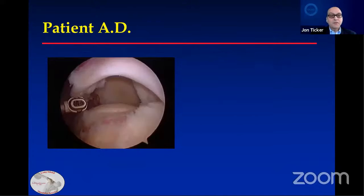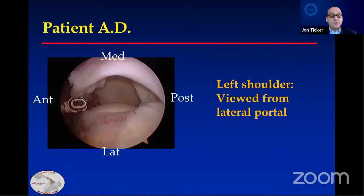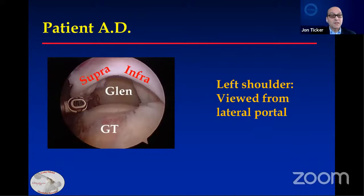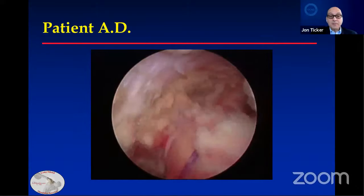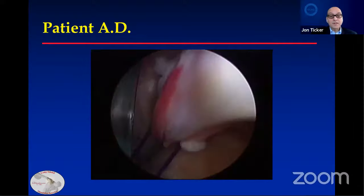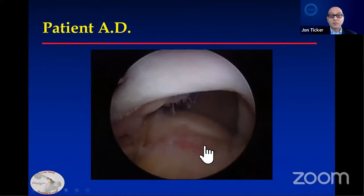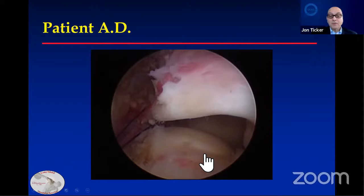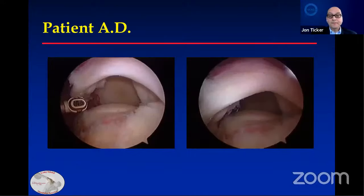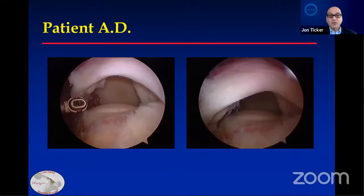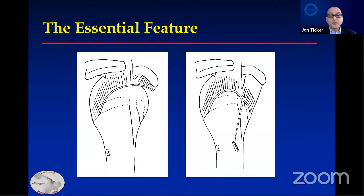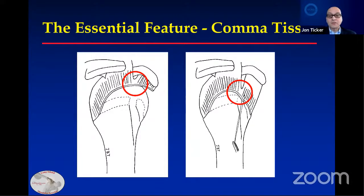Viewing the same patient through the lateral portal — anteriorly on the left — with the glenoid, greater tuberosity, supraspinatus, and infraspinatus. If we pull the subscapularis, we'll see the tendon come over the lesser tuberosity and bring the posterior superior cuff more laterally. That's going to help me with my repair. Before and after — I'm able to get a much more secure repair. The essential feature is that confluence between the subscapularis and the supraspinatus called the comma tissue.